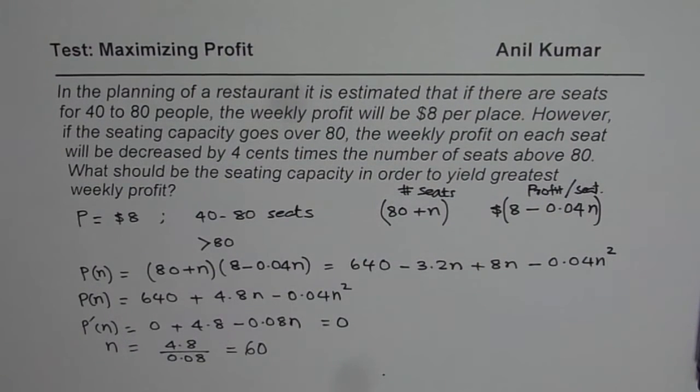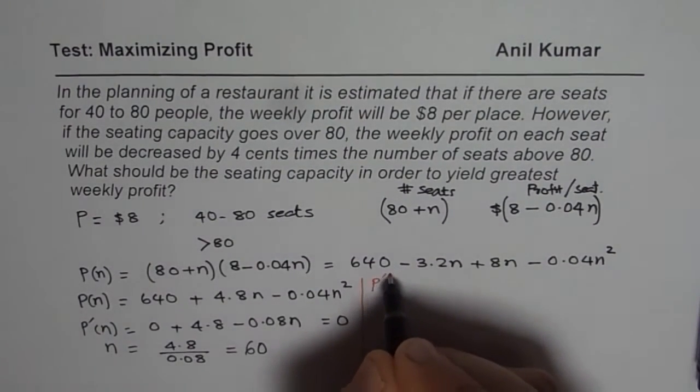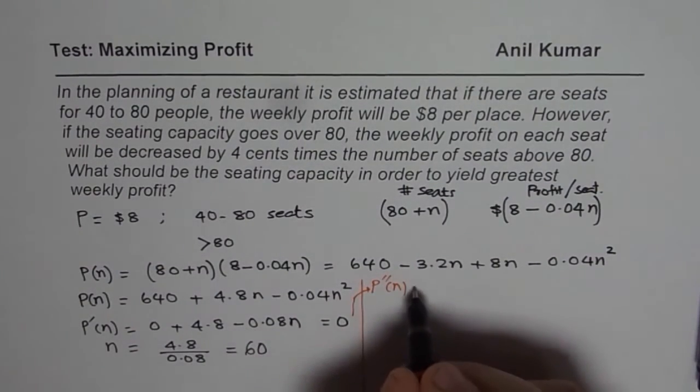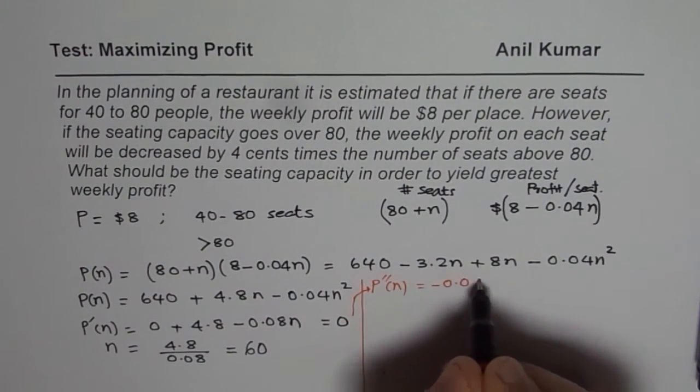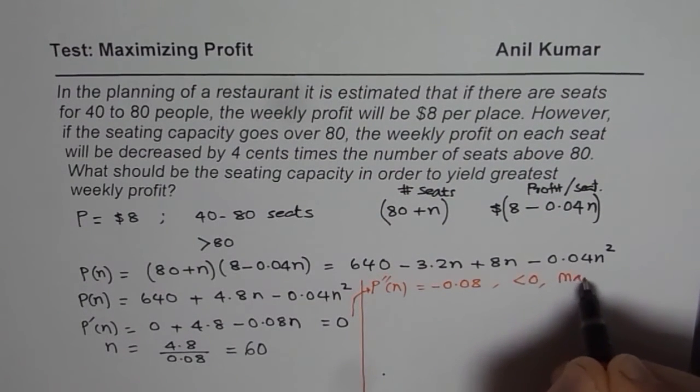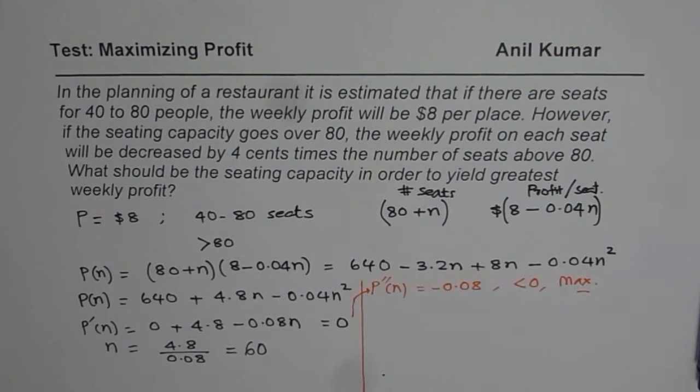So 60 is additional seats. Now these additional seats are going to give us the maximum. How do we know that? We can find the second derivative of this. So there are two ways to find. So first is, we can find the second derivative. Second derivative from here, we can have minus 0.08. Now this is negative. So this is less than 0, that means maximum. So that is from the second derivative test.